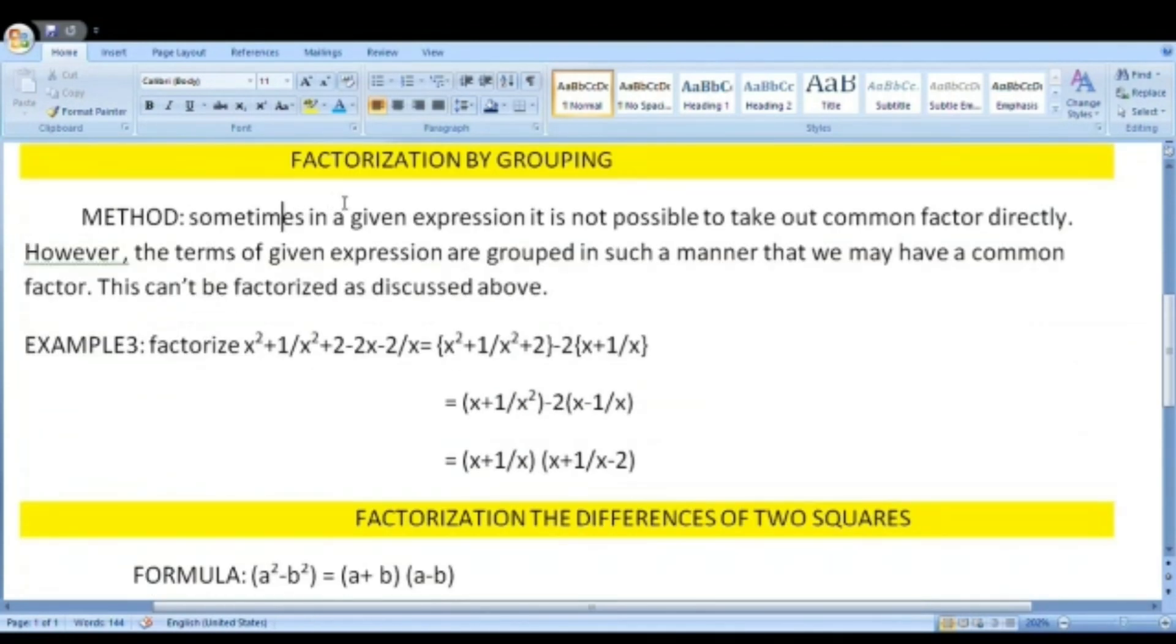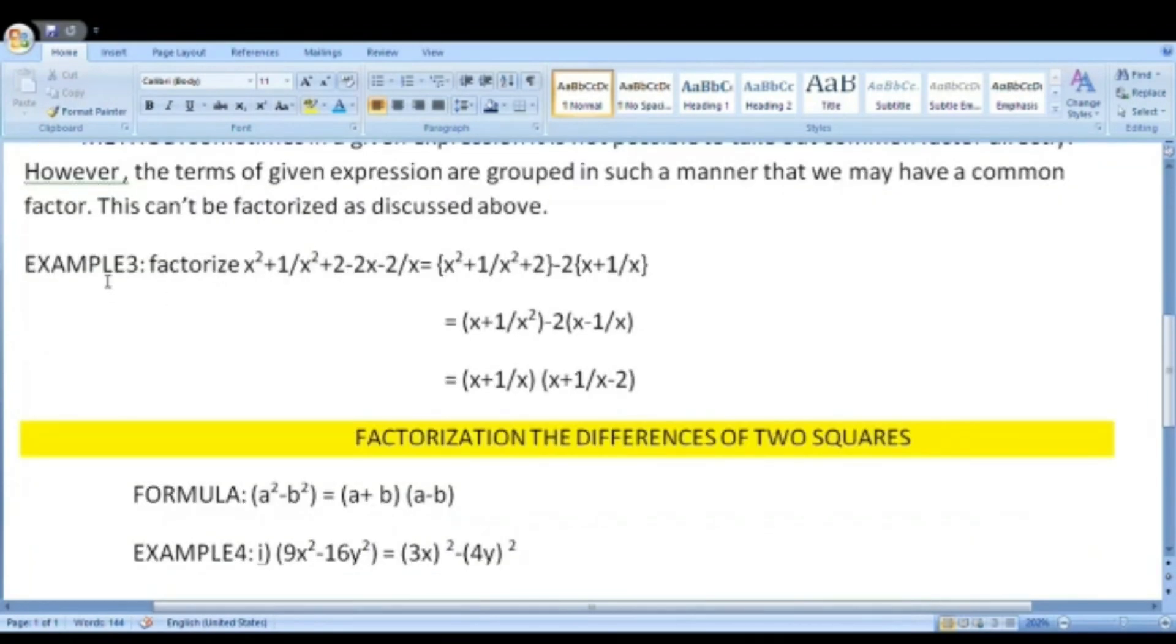Factorization by grouping is the next method. Sometimes in a given expression, it is not possible to take out common factors directly. However, the terms of a given expression are grouped in such a manner that we may have a common factor. This can be factorized as discussed above. Moving on to the examples.